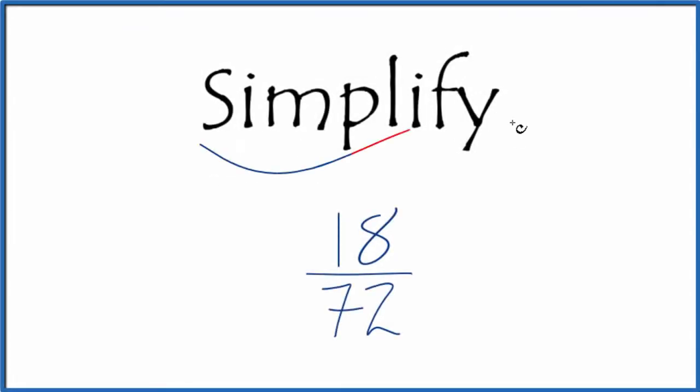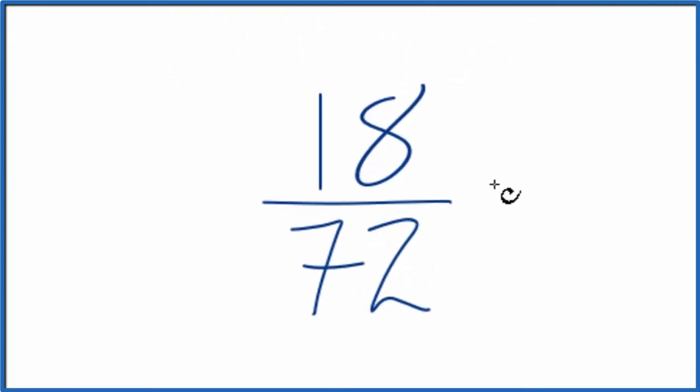If you need to simplify or reduce the fraction 18 over 72, here's how we can do that. What we need to do first is we're trying to find a fraction, another fraction that's equivalent. It has the same value as 18 over 72, just that we've simplified it or reduced it to lowest terms.